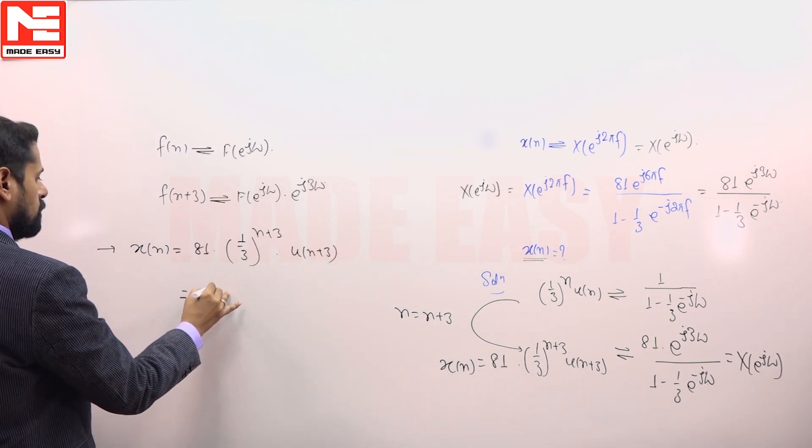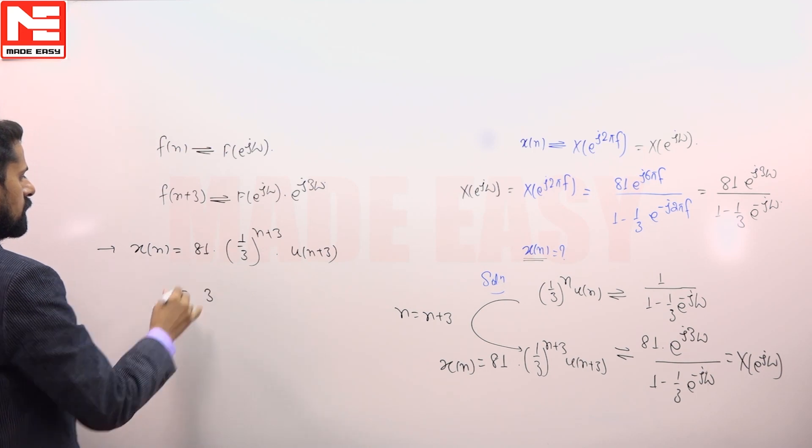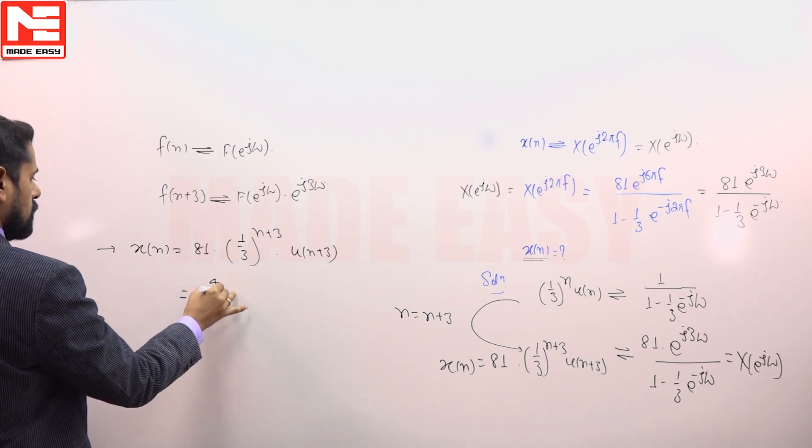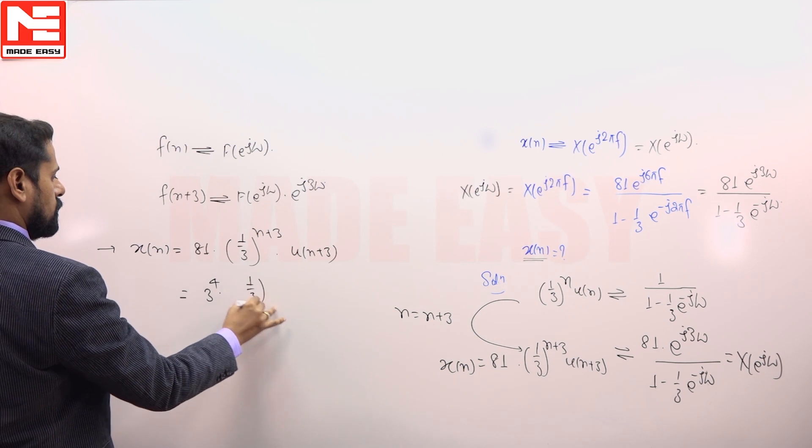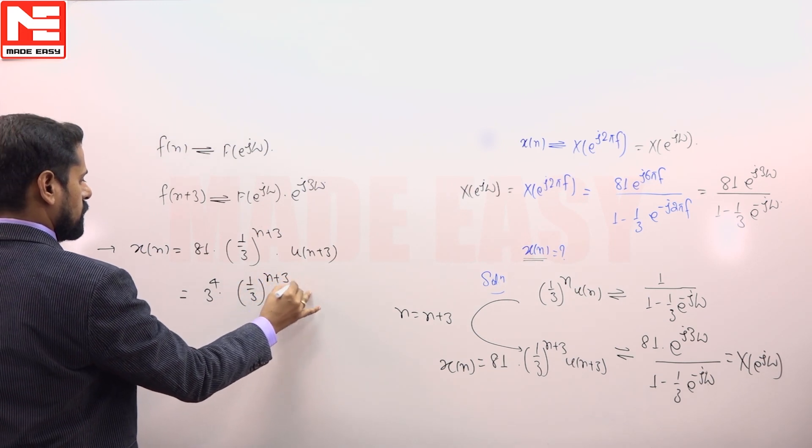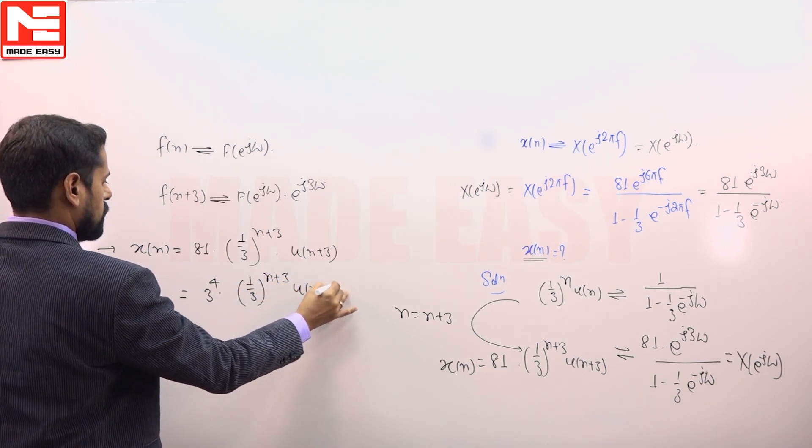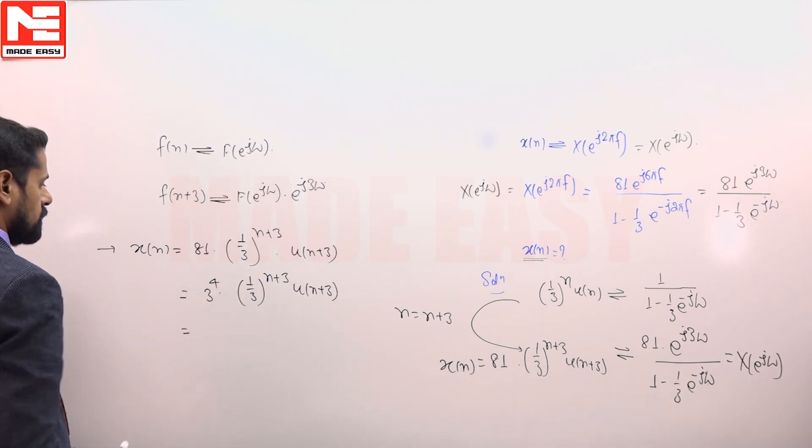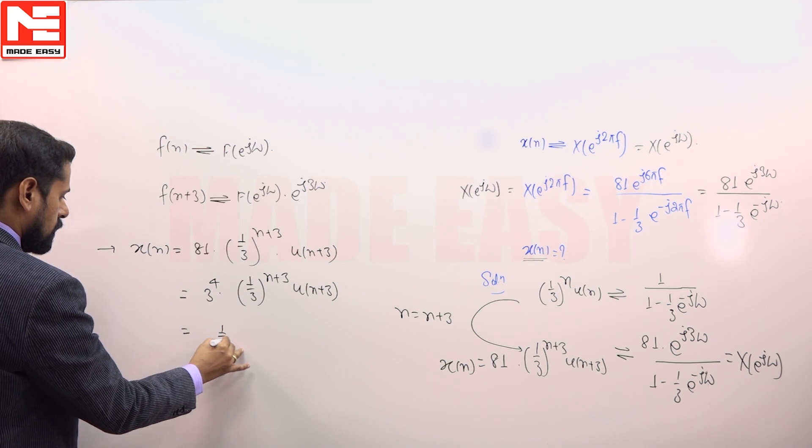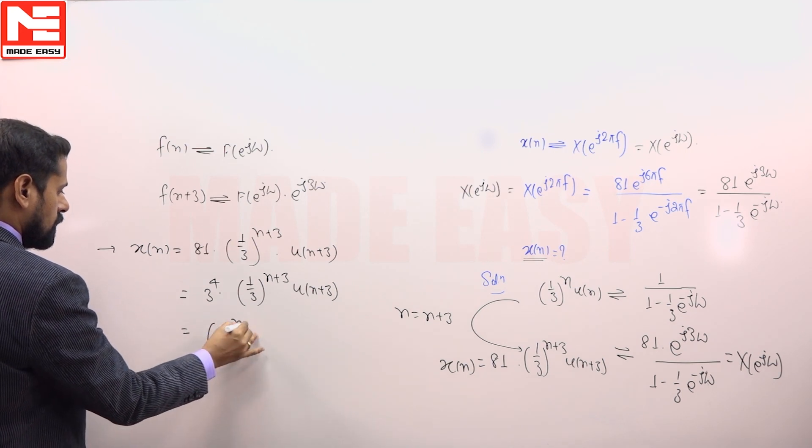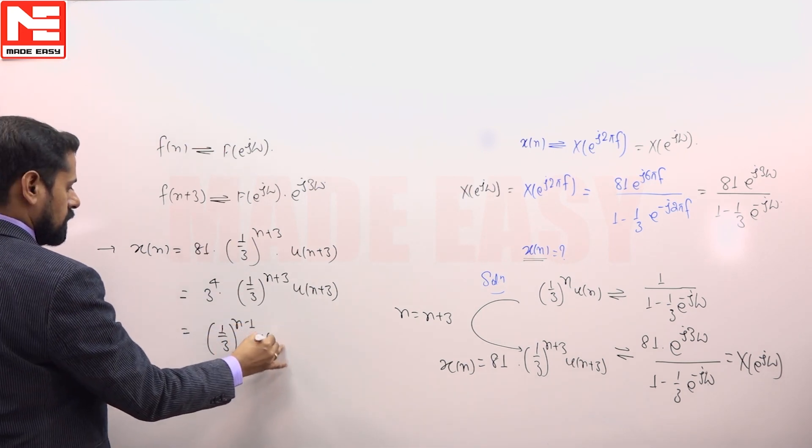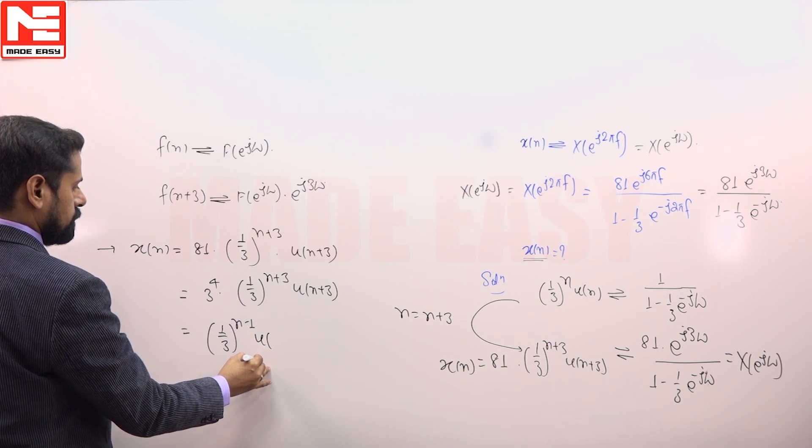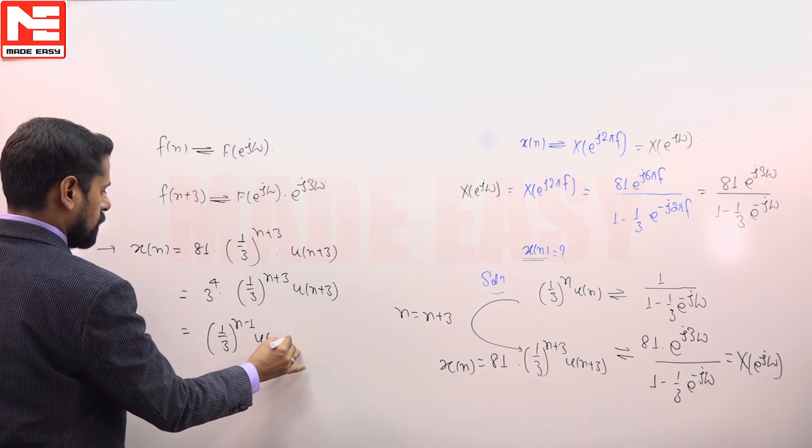81 is, we can write down 81 in this form: 3^4 into (1/3)^(n+3) into u of n plus 3. And when we will multiply these two terms, then it will be equal to (1/3)^(n-1) into u of n plus 3.